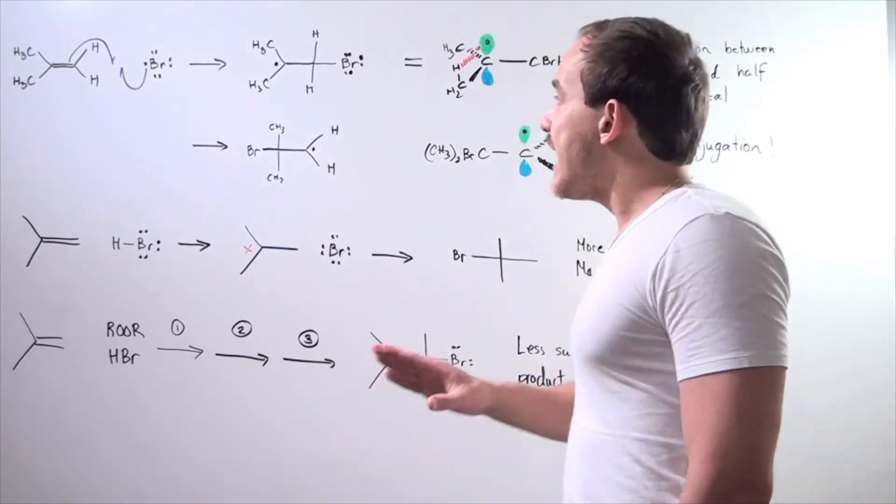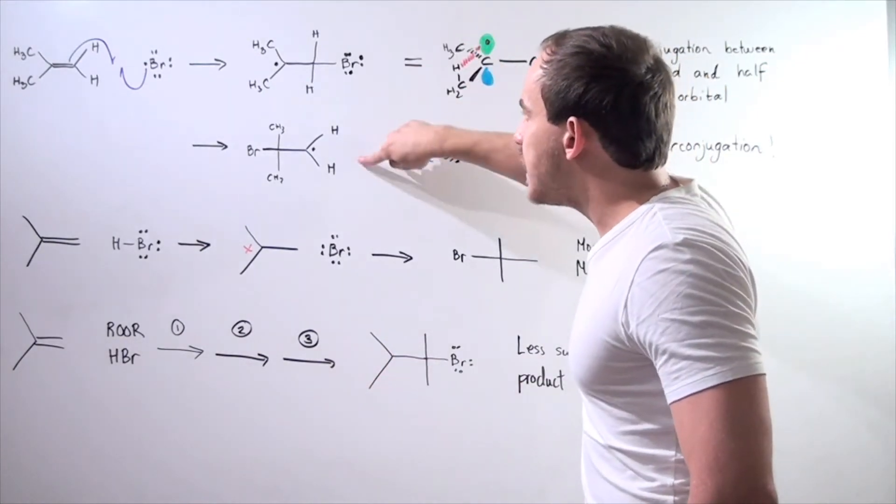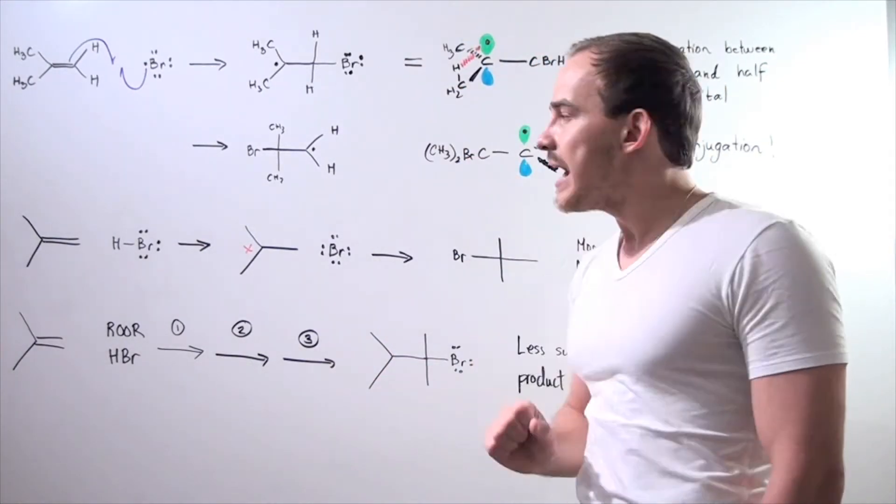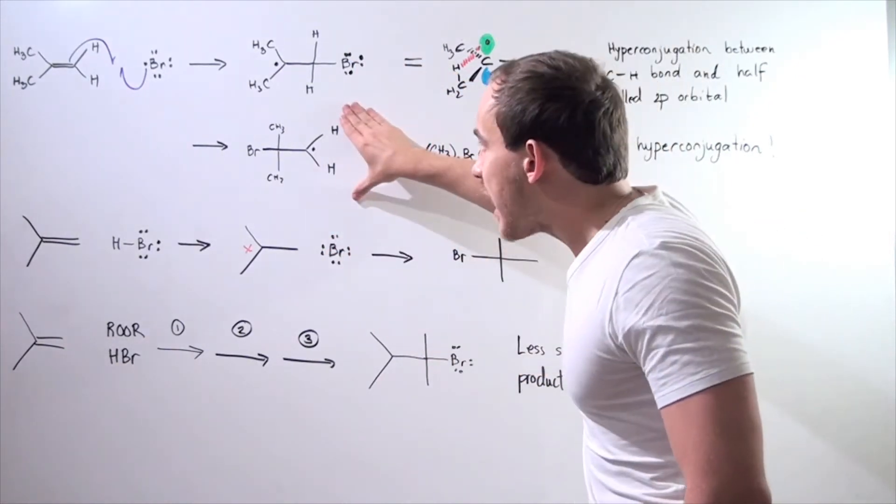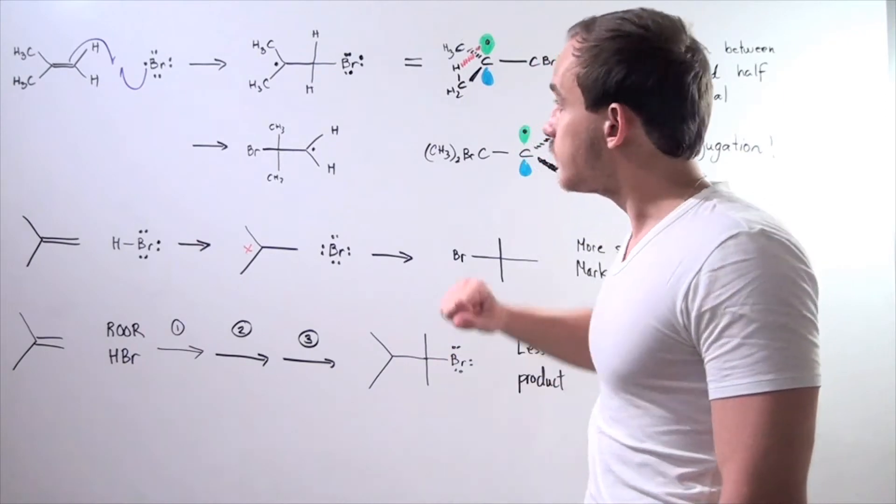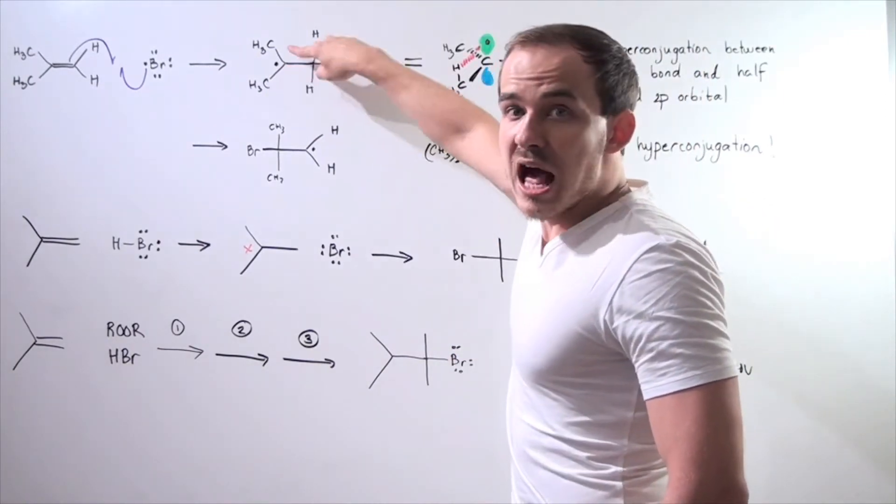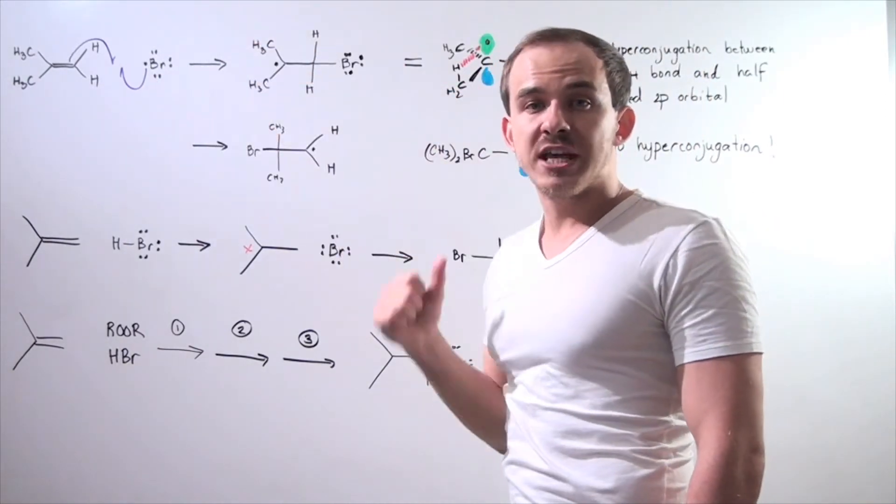Well, the answer lies in the analysis of these two radicals. It turns out that this radical is more stable than this radical because this is stabilized by hyperconjugation.